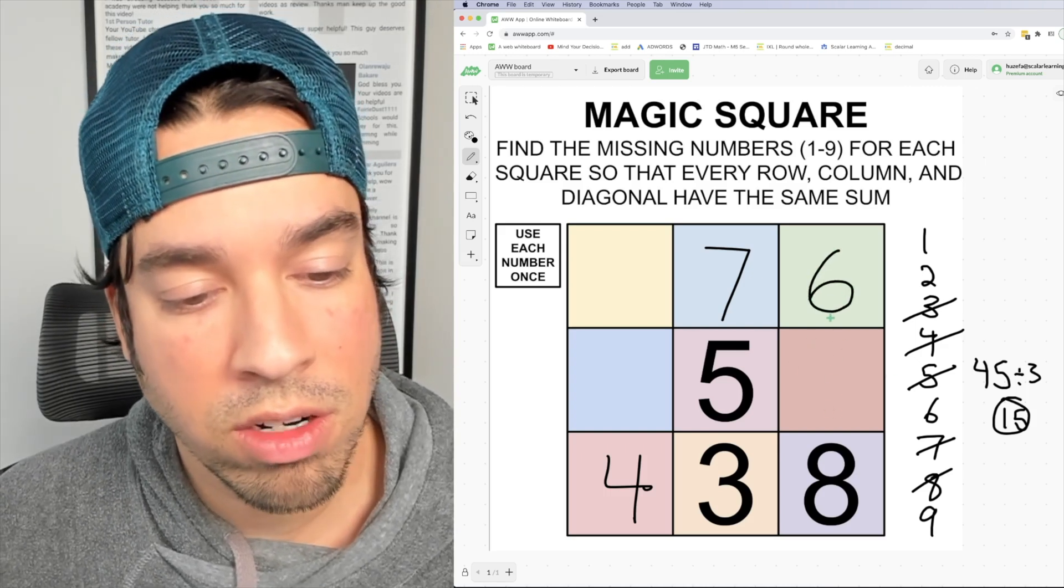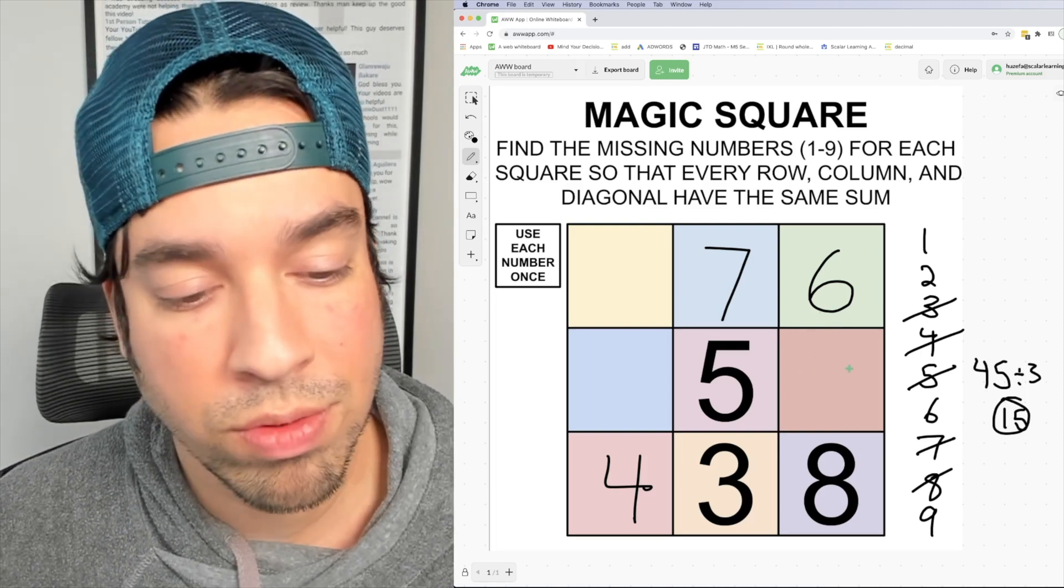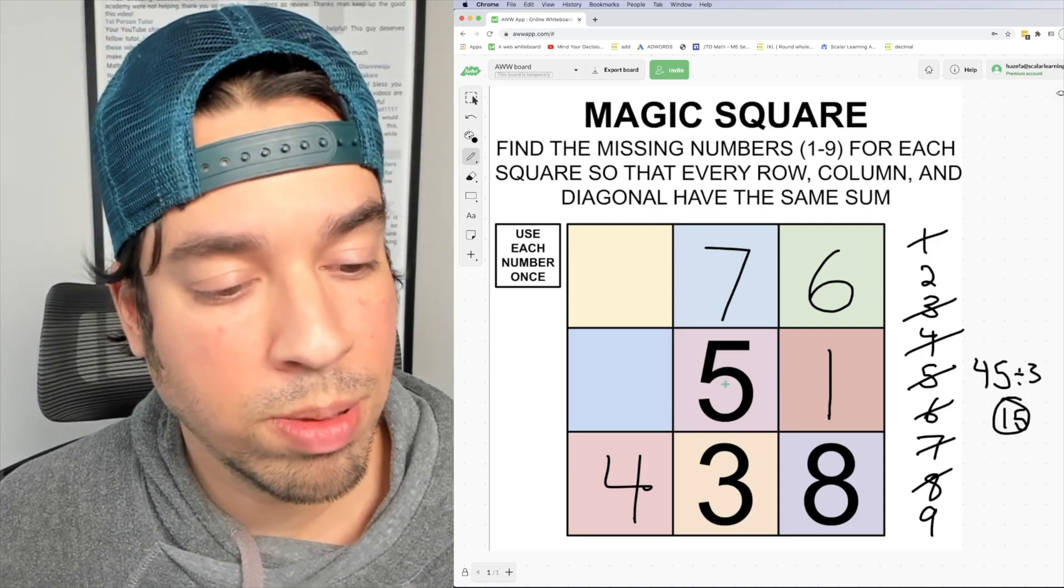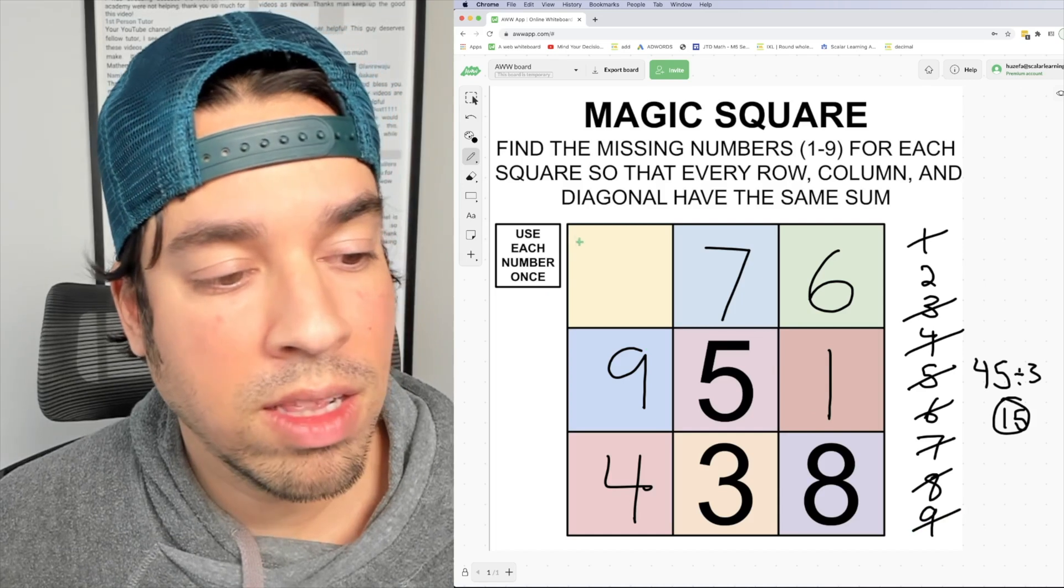Now I can do this middle thing here. I've got a six and I've got an eight. Six plus eight plus what equals 15, that is one. Next I'm going to go to this blue square. One plus five is six plus what makes 15, that would be nine. Finally we have this upper left.